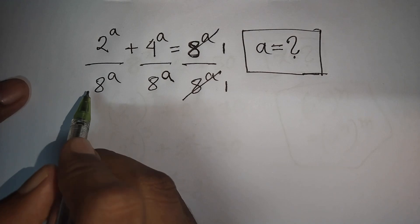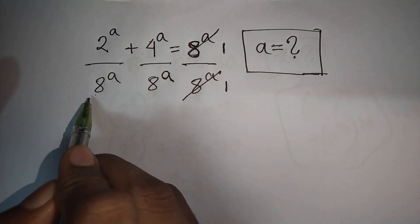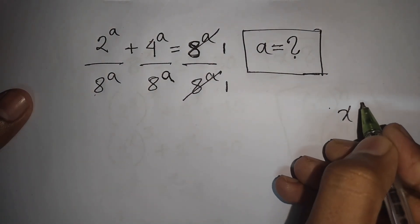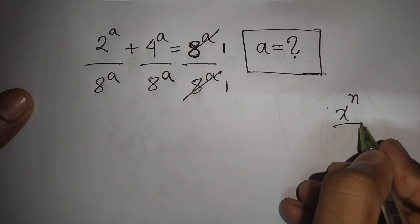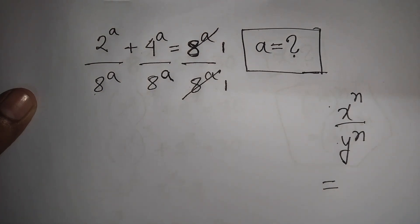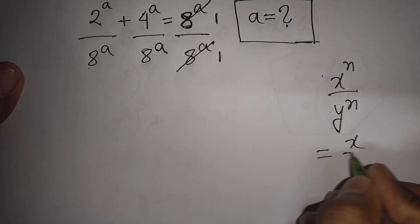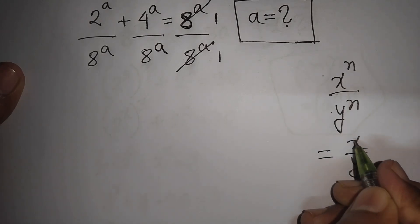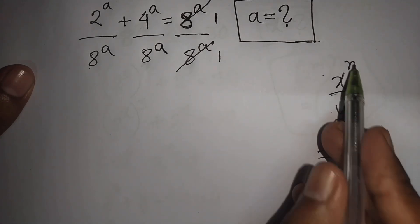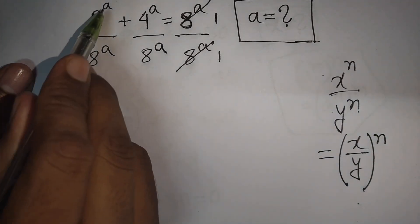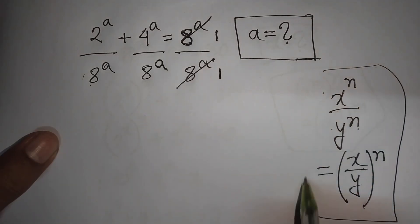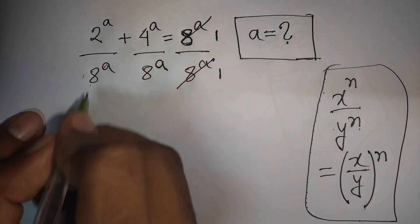Now we see terms with the same power a but different bases. Remember the rule: x power n over y power n is equal to (x over y) to the common power n — same power but different base. According to this rule, we can write 2 over 8 bracket to the power a.